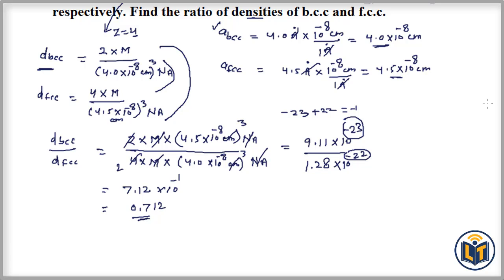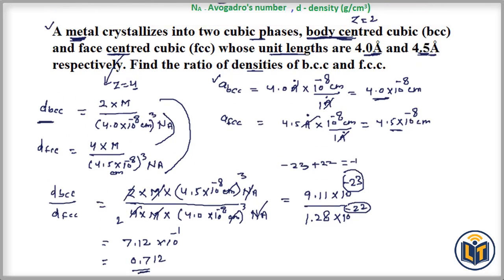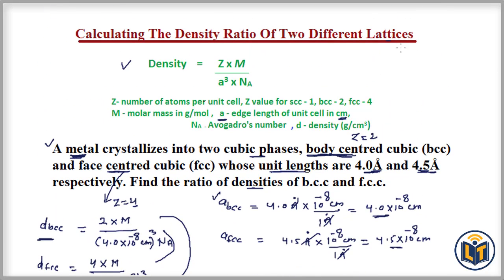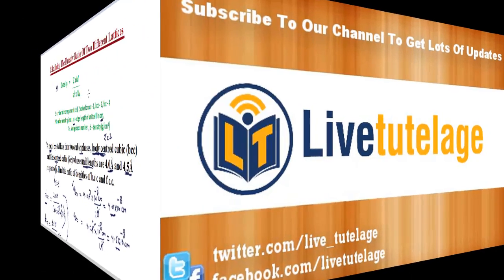So the density ratio of BCC to FCC is 0.712. To summarize: first we calculated the volume of both lattices by converting unit lengths to centimeters, then we identified the number of atoms per unit cell for each structure, applied the density formula for each lattice, and divided them to find the ratio.